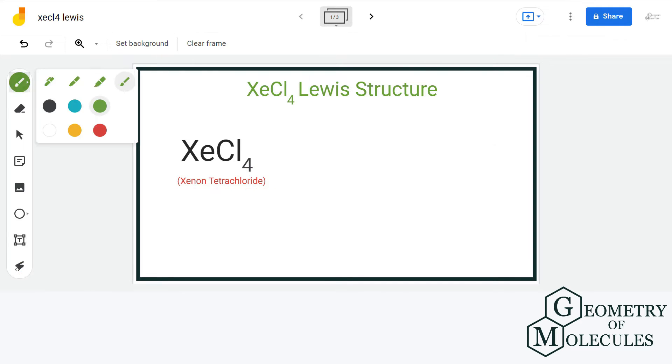For that, let us count the total number of valence electrons. We have 1 xenon atom having 8 valence electrons and 4 chlorine atoms having 7 valence electrons. Now that gives us a total of 36 valence electrons.